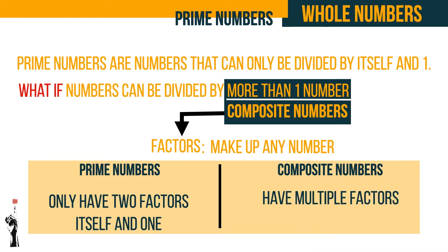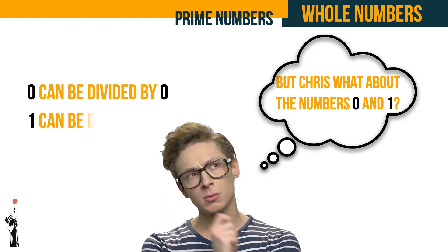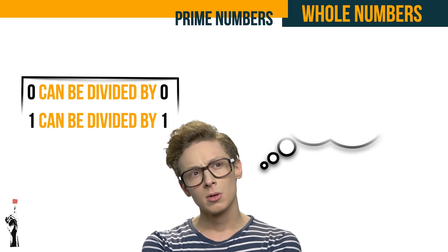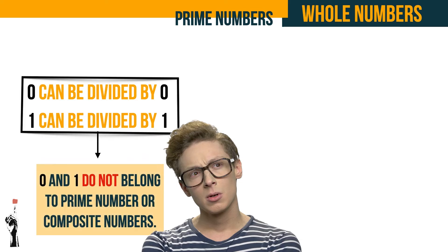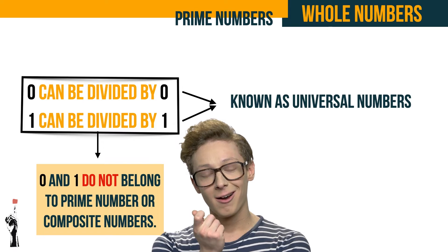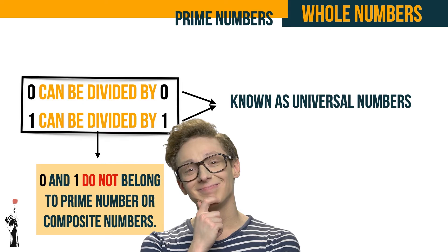If a number can be divided by more than just itself and one, those numbers are called composite numbers, and composite numbers have many factors. What about zero and one? Zero and one do not belong to prime numbers or composite numbers — they are called universal numbers. Universal numbers do not belong to any specific group but belong to an overarching set that governs all other numbers.